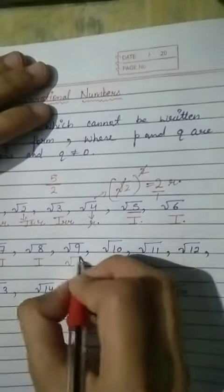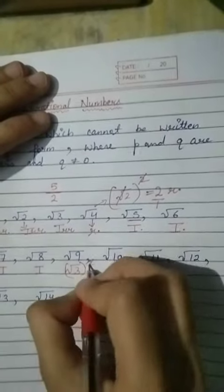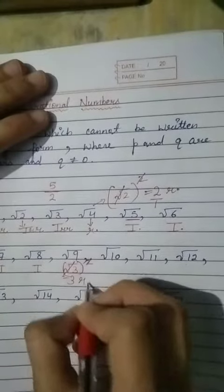Now, √9. √9 we can square, √3 whole power 2. The 2 cancels the root, so you get 3. What is 3? A rational number.